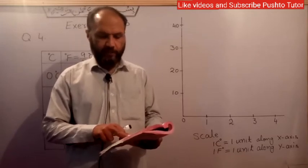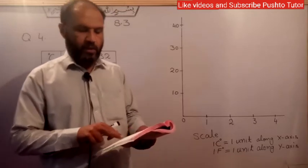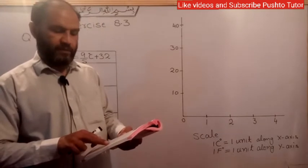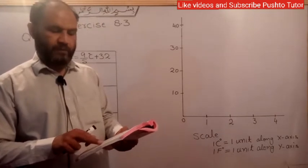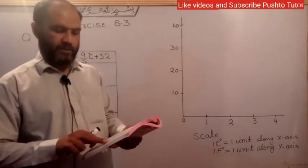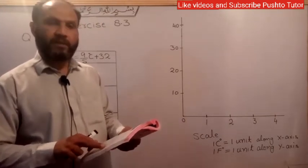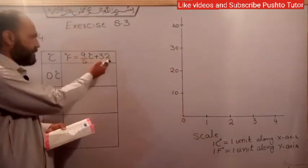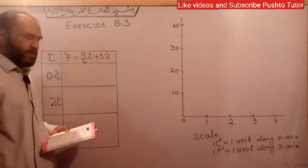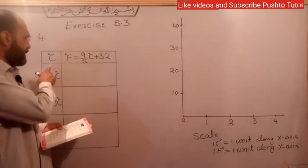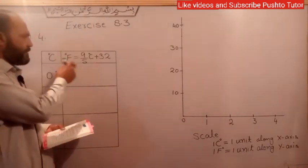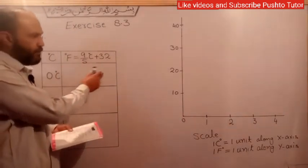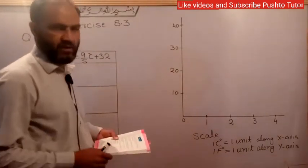The conversion formula is F equal to 9 over 5 into C plus 32. Using this formula, the temperature is converted and the graph is drawn.